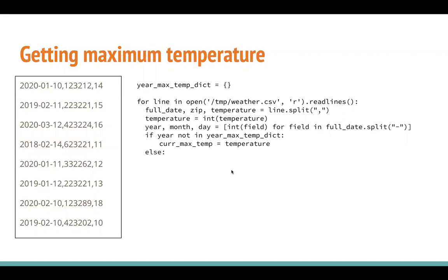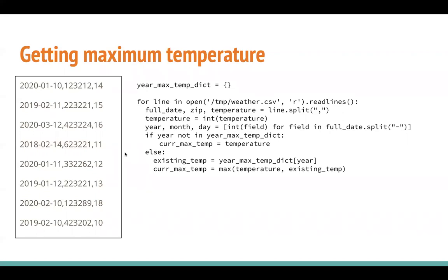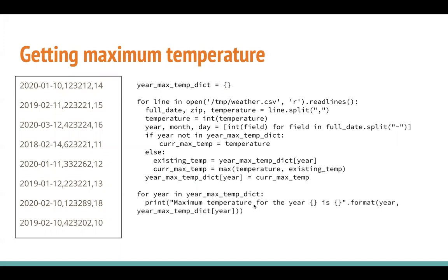Else, if the year already exists in the dictionary, we grab the existing temperature and make a comparison - is the current temperature for that year more than the existing value? Whichever is more, either the existing or the current temperature, we put that in the variable current maximum temperature. After this if-else block, our current maximum temperature contains the maximum temperature of the year seen so far, and we update that in the dictionary with that particular year. Afterwards, we can print out the maximum temperature for each year seen in the file.